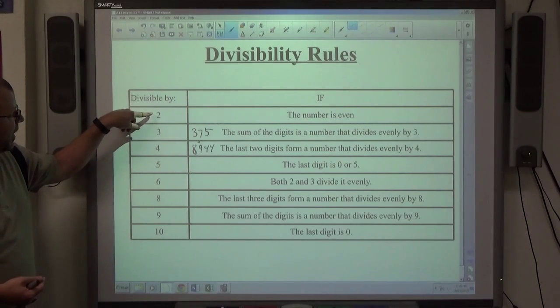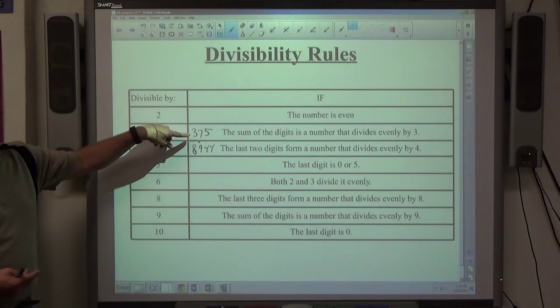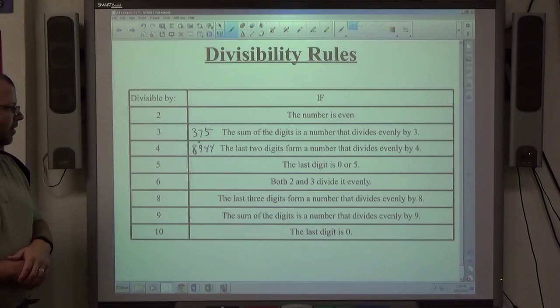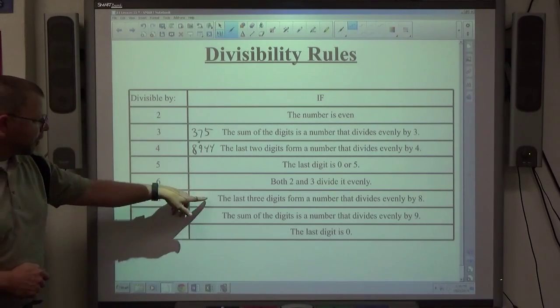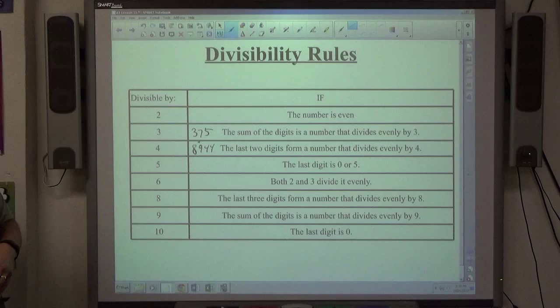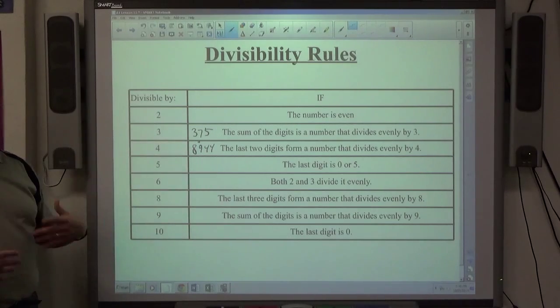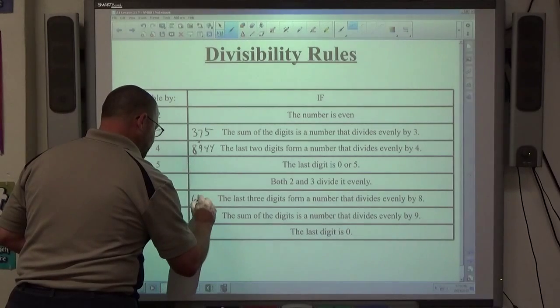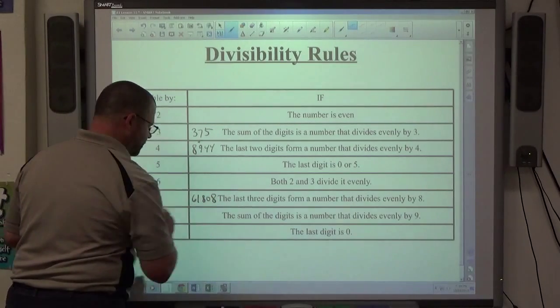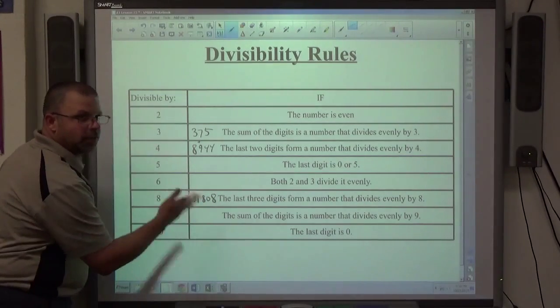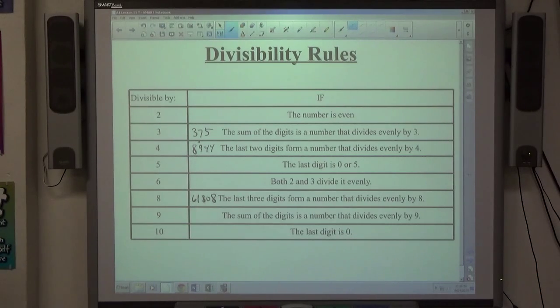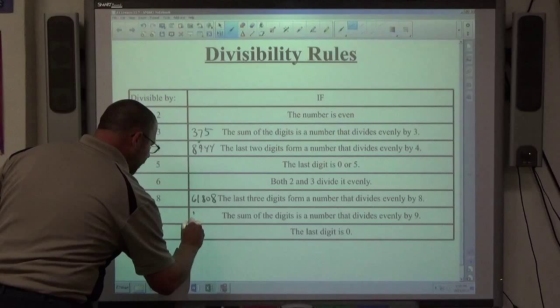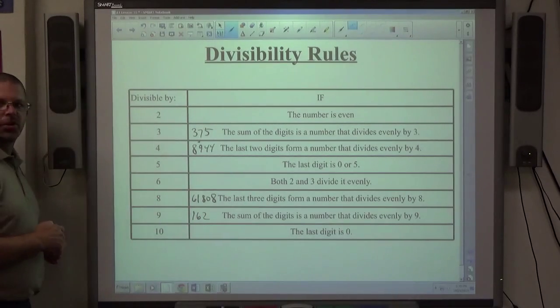If 2 and 3 both work, it's even and the sum of the digits adds up to a number that divides by 3, then it divides by 6. The last three digits form a number that divides evenly by 8, so it's like the 4 rule except it divides evenly by 8. So 61,808, 808 divides by 8 so the whole thing does. For 9, the sum of the digits adds up to a number that divides evenly by 9. 162, 1 plus 6 plus 2 is 9, divided by 9, so 162 divided by 9.